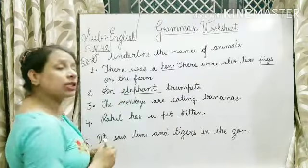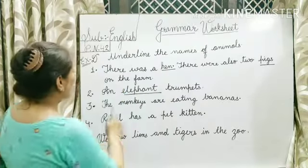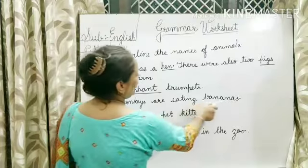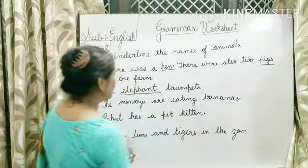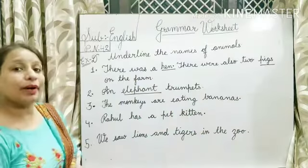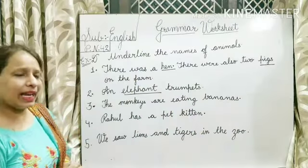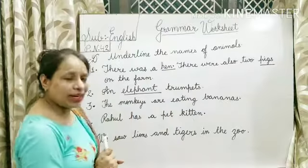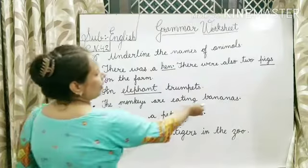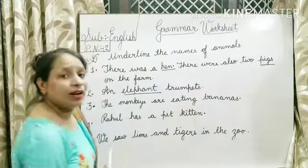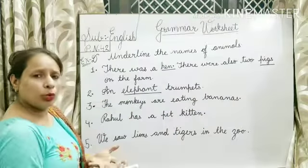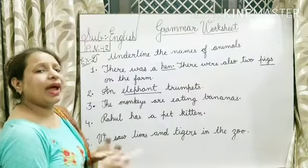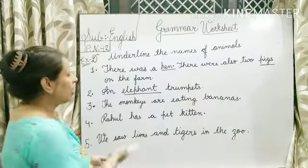Coming to the third one. The monkeys are eating bananas. Jo monkeys hain woh kya kha rahe hain — banana kha rahe hain. Yahan pe monkey toh animal hai na. Banana kya ho gaya? Thing, cheez, fruit — vegetables, pen, pencil — ye sab cheezein hain. So monkey underline karna hai.